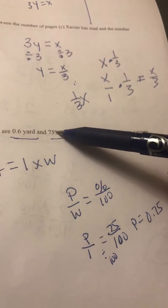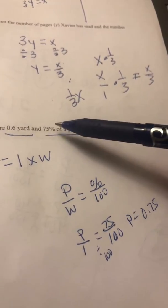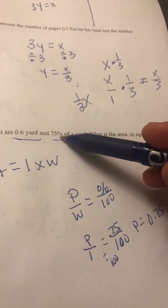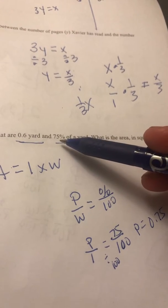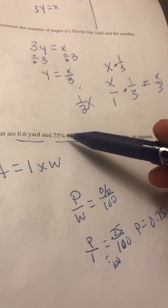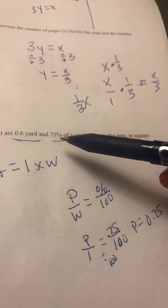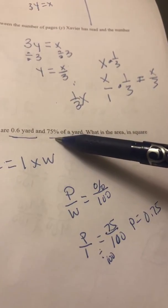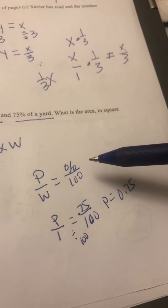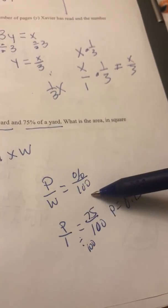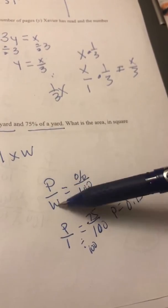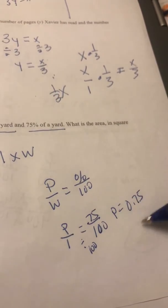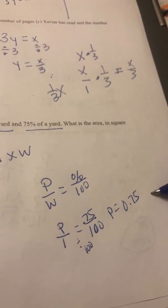You could also have just taken one times 0.75 in your calculator and gotten 0.75. For those of you that are comfortable with that and don't get confused knowing when to use that, the rest of you that aren't quite there yet, you should use part over whole equals percent over 100 and set it up so that you come out with the right answer.